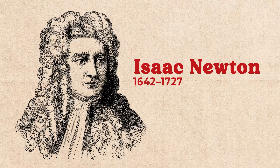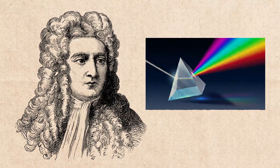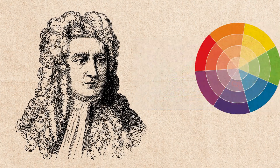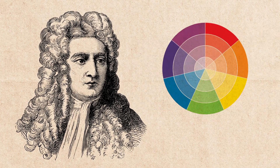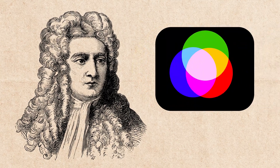In the 17th century, Isaac Newton figured out that white light is a combination of colors that can be separated by a prism, revealing the spectrum: red, orange, yellow, green, blue, indigo, and violet. This discovery led to Newton's development of the color wheel and the idea that colors could be mixed from a set of primary colors — red, green, and blue.